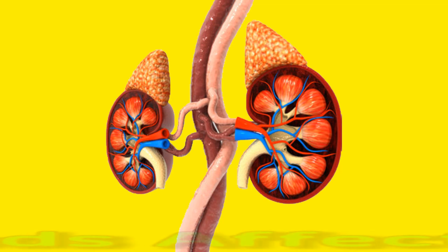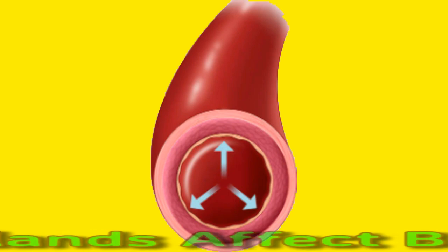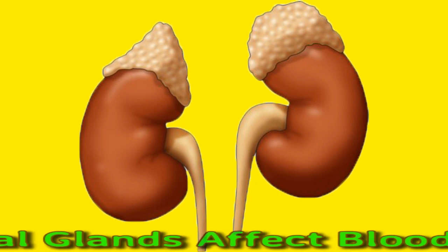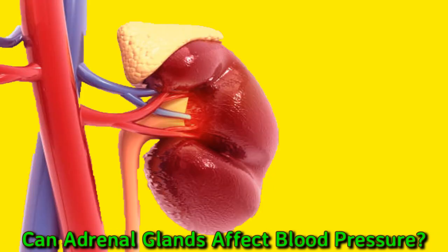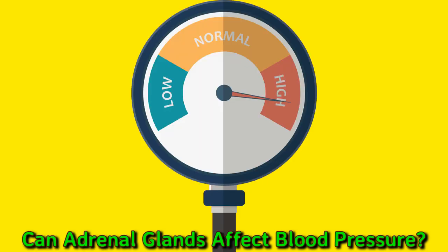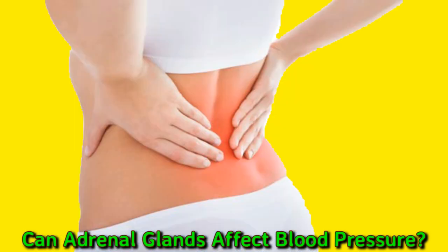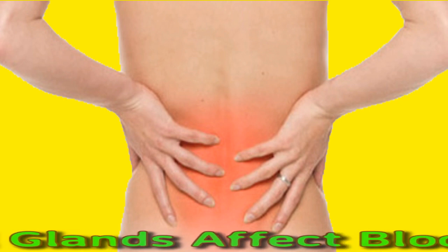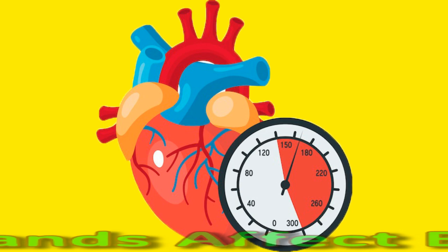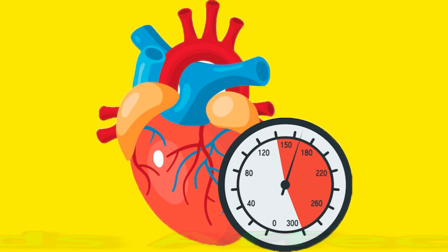Can adrenal glands affect blood pressure? Some adrenal gland conditions can cause high blood pressure with serious, potentially severe complications. Adrenal glands are an essential part of how a person's body regulates blood pressure, metabolism, and immune responses. Conditions that affect adrenal gland function can significantly affect this regulation. One potential complication of adrenal dysfunction is high blood pressure, or hypertension. Almost half of all adults in the United States have hypertension, and in 2020 the condition caused or contributed to more than 670,000 deaths in the United States.